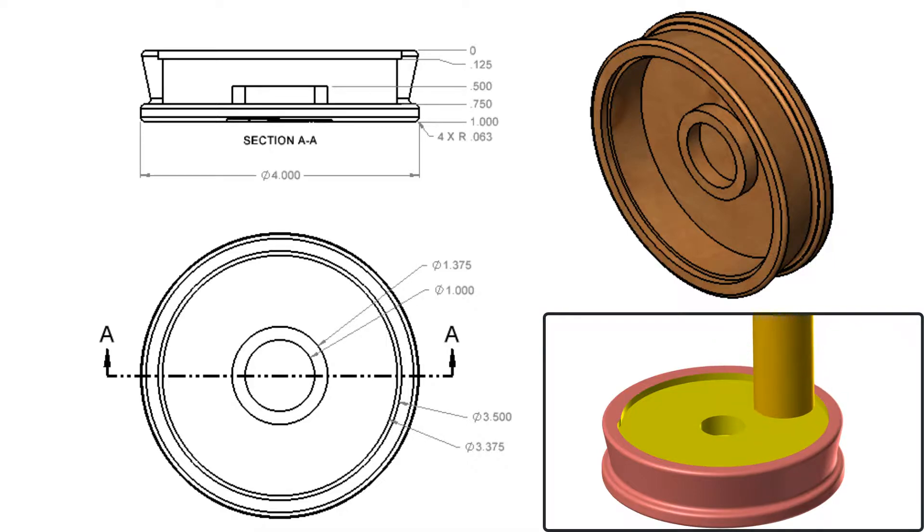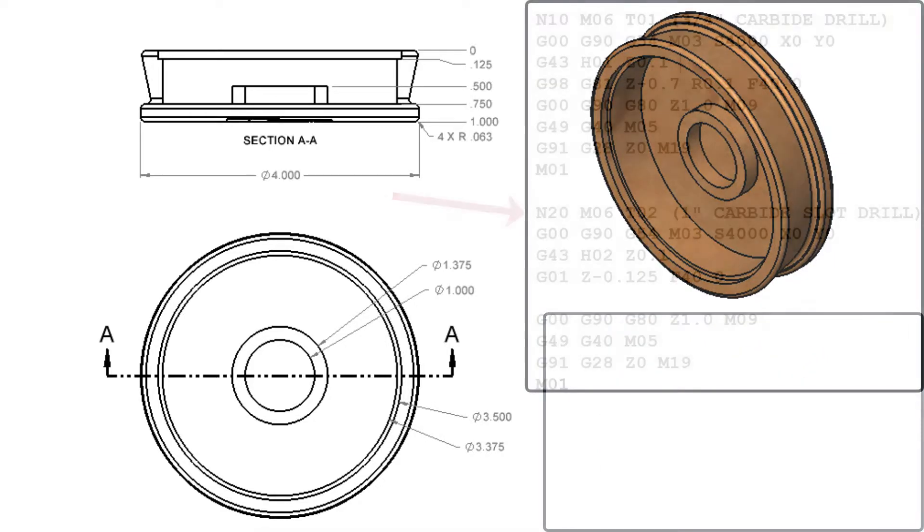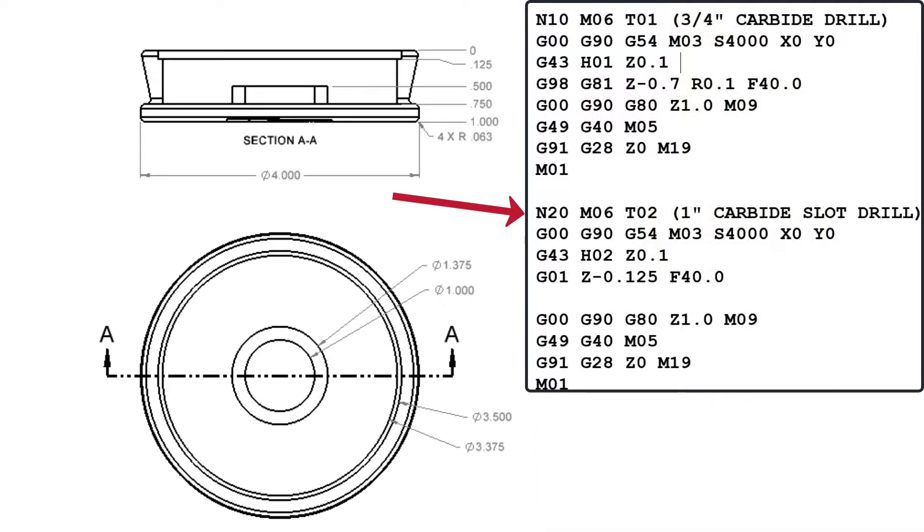Since I'm only making a few parts, I'll use the same tool to rough and finish. First I'll put the tool in the spindle and position over the center of the part and then feed it to depth.